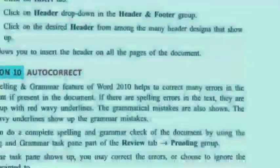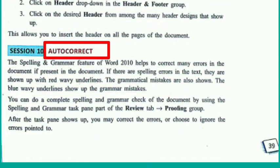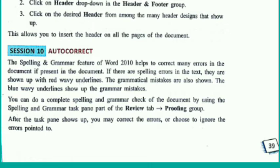The next feature is autocorrect. The spelling and grammar feature of Word 2010 helps to correct many errors in the document. If there are spelling errors in the text, they are shown with red wavy underlines. Grammar mistakes are shown with blue wavy underlines. You can do a complete spelling and grammar check using the Spelling and Grammar task pane in the Review tab. After the task pane shows up, you may correct the errors or choose to ignore them.